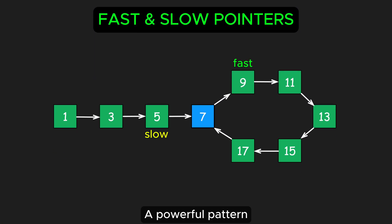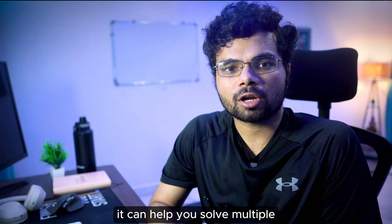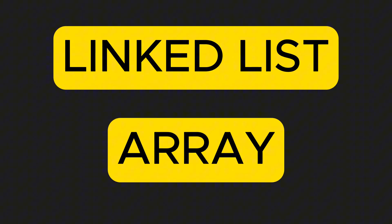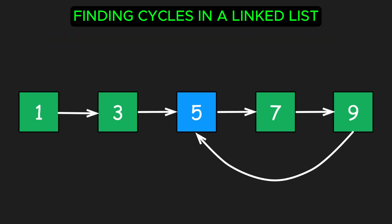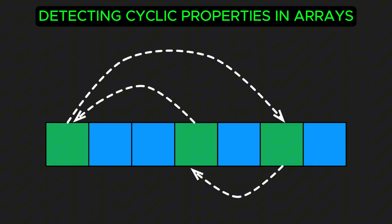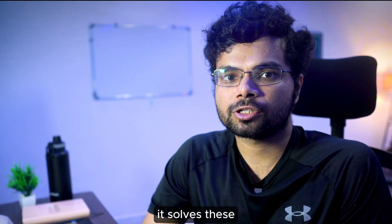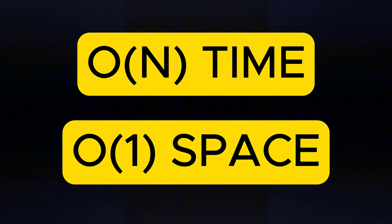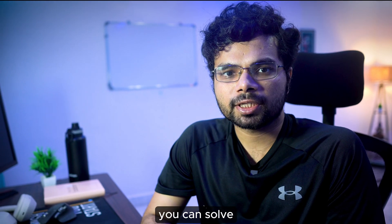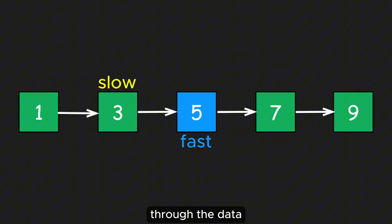Fast and Slow Pointers is a powerful pattern where you use two pointers and move them at different speeds. It can help you solve multiple linked list and array related problems like finding cycles in a linked list, finding the middle node of a linked list, or detecting cyclic properties in arrays. The beauty of this pattern lies in how efficiently it solves these types of problems. It only uses O(n) time and O(1) space complexity. Plus, you can solve these types of problems in just one pass through the data.